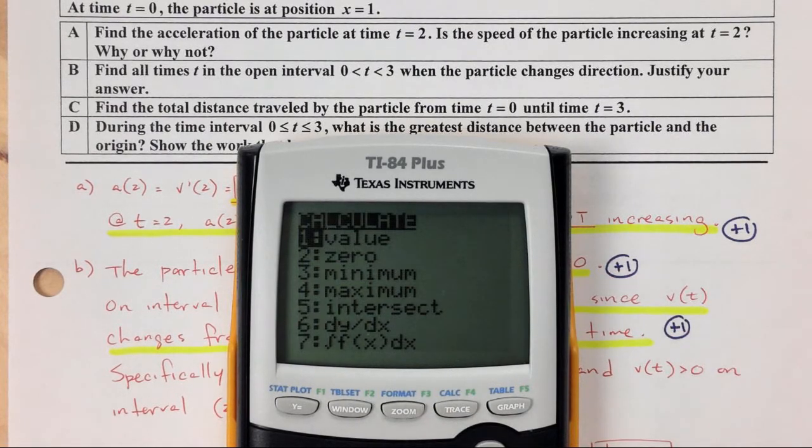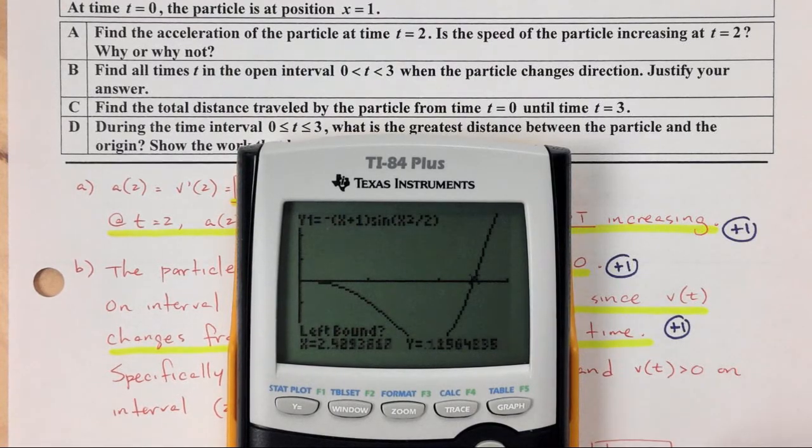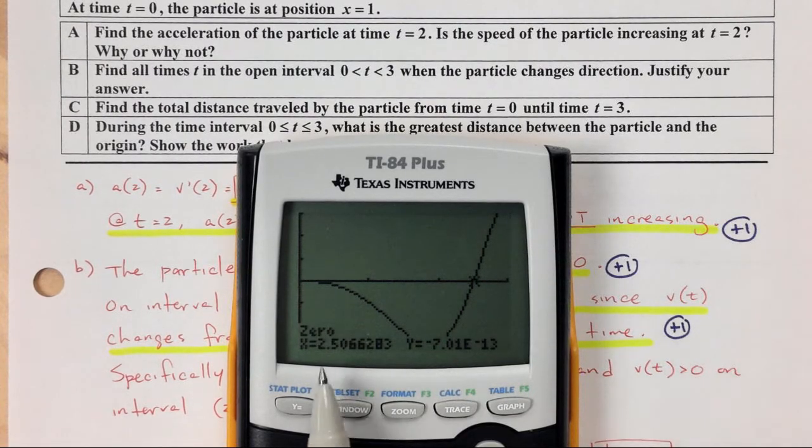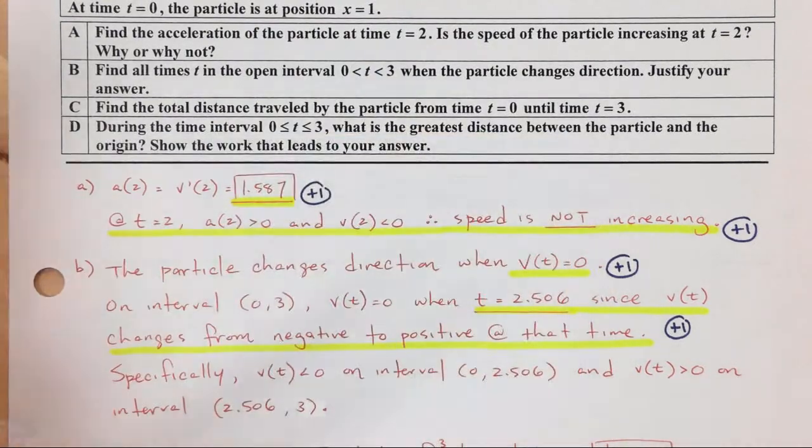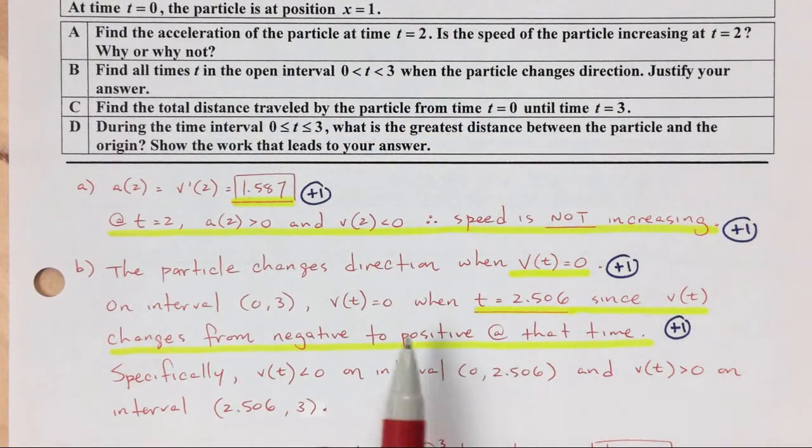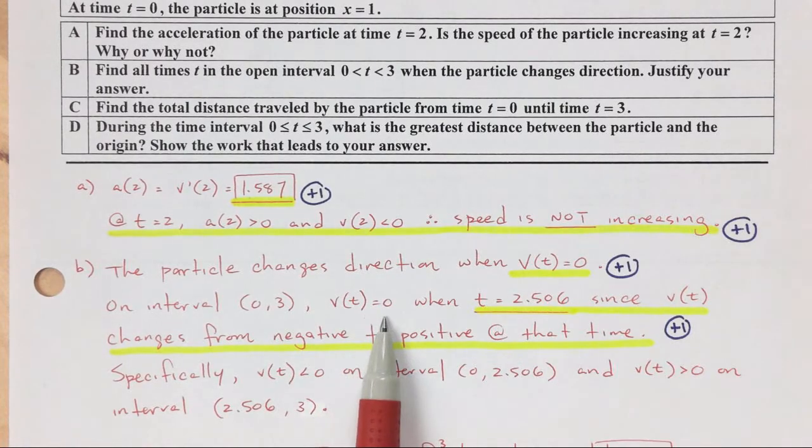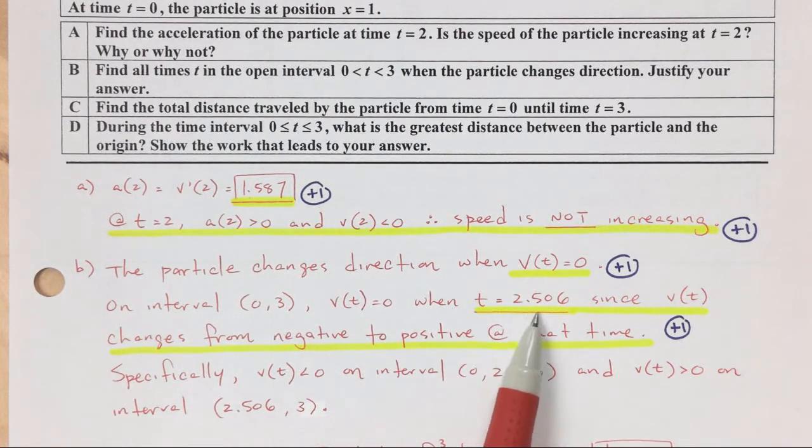And I want to find that value right there. So second, calc, and I'm finding my zeros. So I go to the left, press enter, I go to the right, press enter, I press enter one more time, and I have that big old x equals 2 blah, blah, blah, blah, blah. So this velocity equals 0 when t equals 2.506.